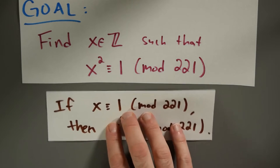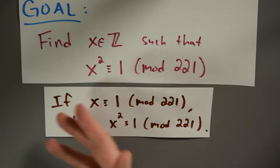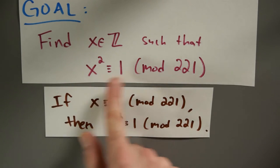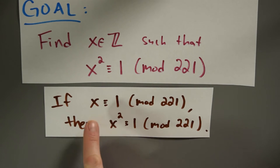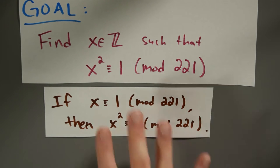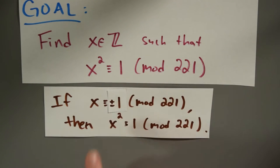We already know one solution. We know that if x is congruent to 1 modulo 221, then x squared is congruent to 1 modulo 221. This is really infinitely many solutions, because there are infinitely many integers x satisfying x≡1 (mod 221). We can do a little better: it's good enough if x is just congruent to plus or minus 1 modulo 221, because then x squared is still 1 mod 221. But are there any other solutions?